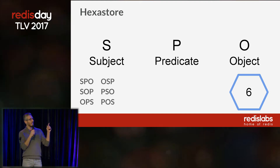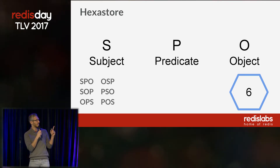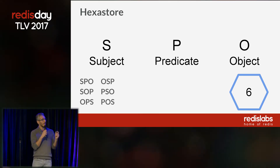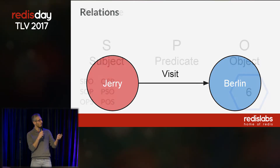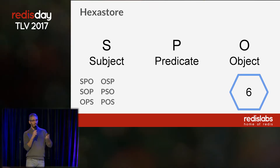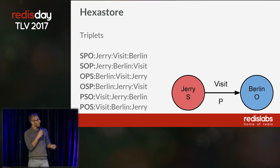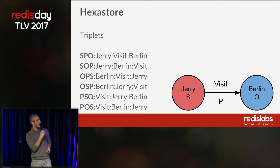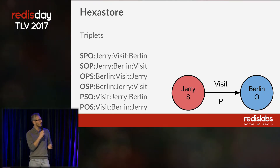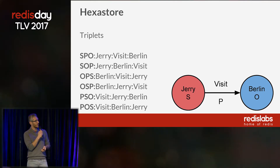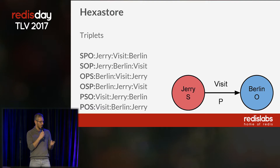The idea is to use a concept called a hexastore. A hexastore is simply a list of triplets, where within each triplet we have three items. One item is referenced as the subject, another is the predicate, and the third one is the object. Usually, the subject is a reference to the source node, the predicate is the actual edge, and the object is the destination node. For each relationship, we store all six permutations. The SPO ordering specifies that the first item is the source node, followed by the edge, and then the destination node.